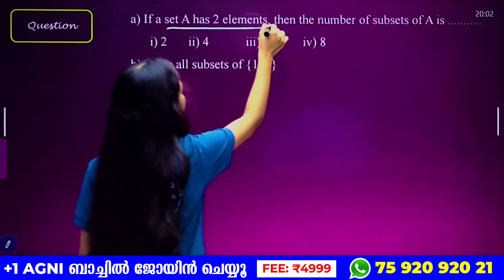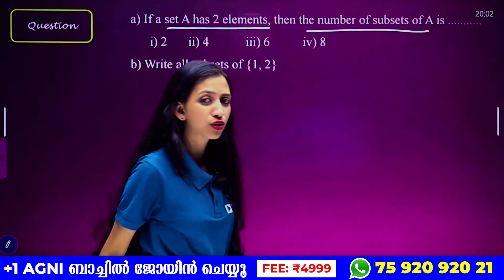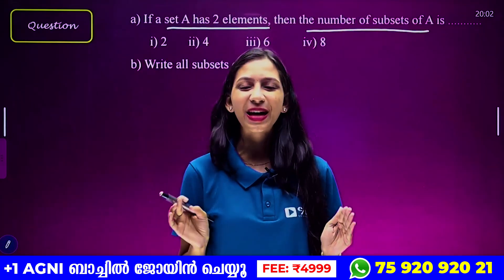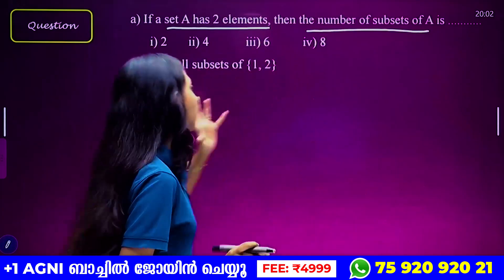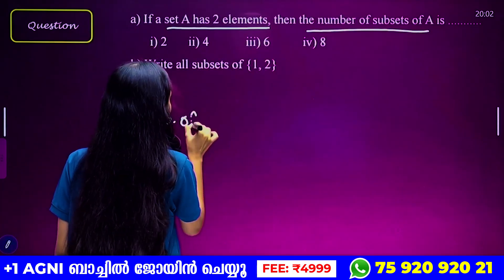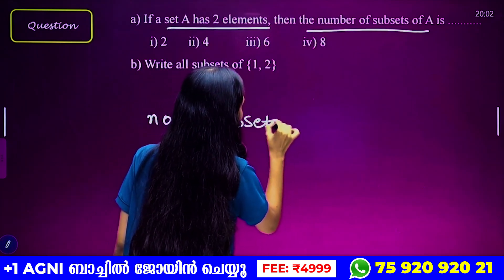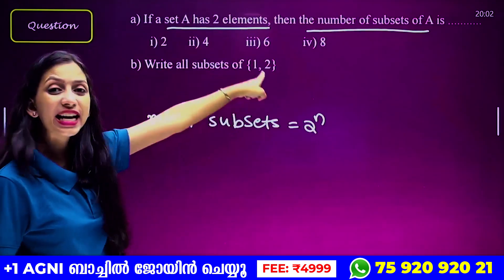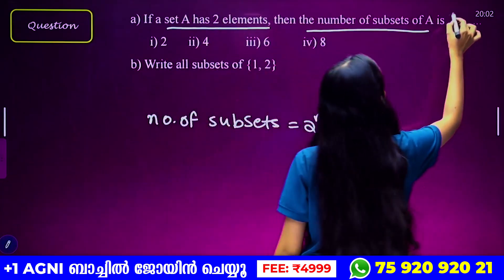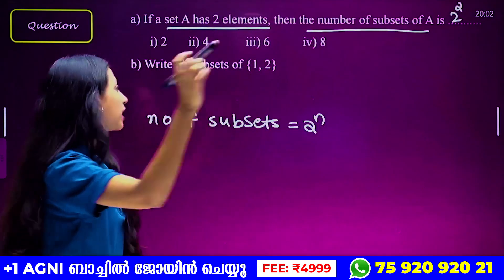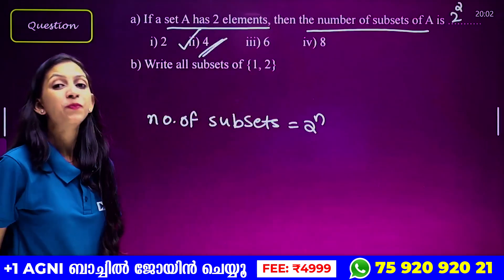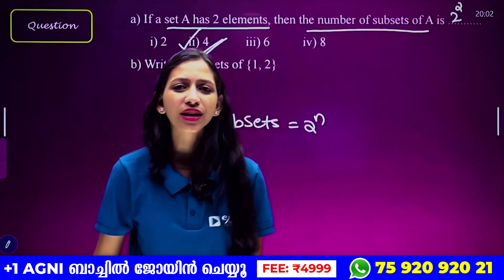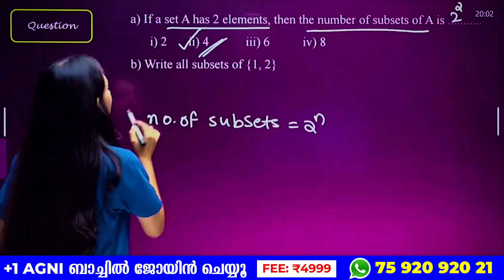We have 2 elements called the number of subsets. We ask what about the subset of a subset — that is not the sum of a subset. Then we ask the number of n elements. What is the number of subsets? 2 raised to n. There are two elements in this set, so the number of subsets is 2 raised to 2. So, what is the answer? 4. This is the exam formula you should learn.